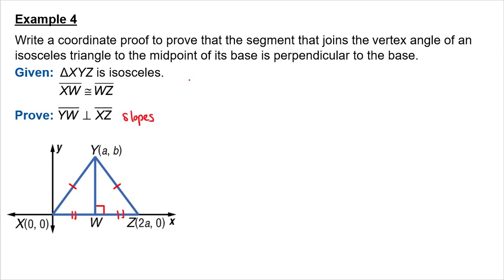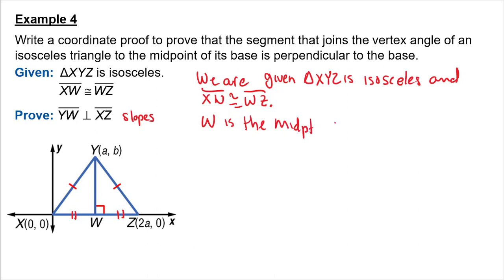I should have written the given. We are given triangle XYZ is isosceles, and XW is congruent to WZ. So I need to find the coordinates of W. Since W is the midpoint, W's coordinates are 2A over 2, 0, which is A, 0. Again, notice how they use 2A so that I have a nice number here. I just have regular A. I don't have half A. If they would have just used A, I would have been working in halves.